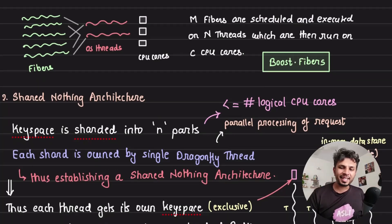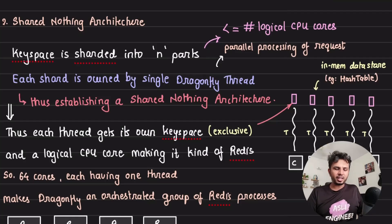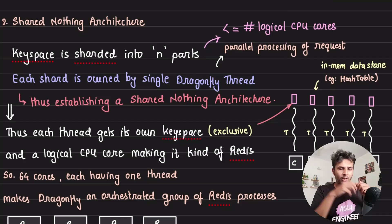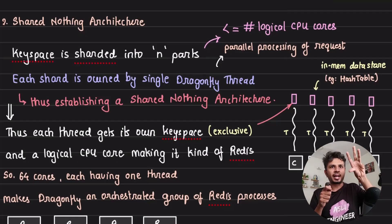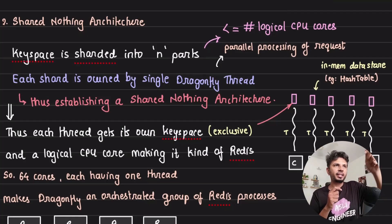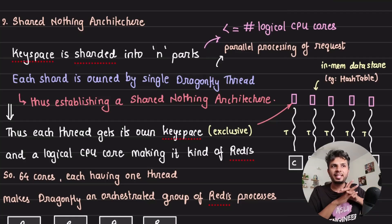The second and most important part is the shared nothing architecture. When you think of any in-memory key-value store, you'd think of a hash table — and since DragonFly DB is multi-threaded, you might imagine multiple threads accessing the same global hash table, requiring mutual exclusive access. This would lead to a lot of contention, so what DragonFly DB did instead is go with a shared nothing architecture.